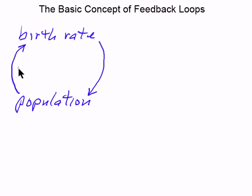And we have a feedback loop. Let's give it a name. This is the population growth feedback loop. It's a reinforcing loop, so it gets our standard symbol.